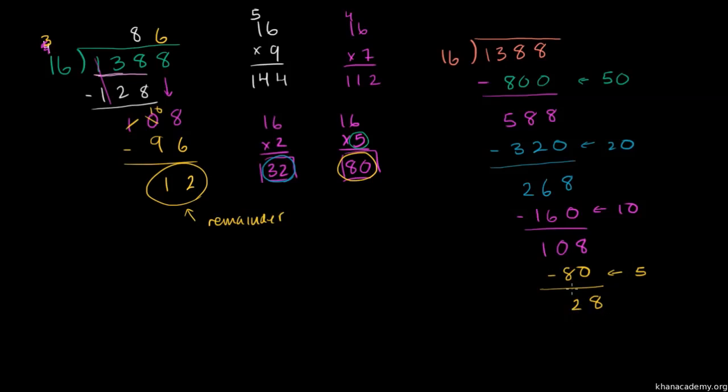And now it's pretty simple. How many times does 16 go into 28? Well, it only goes into it one time. And then when you subtract 16 from 28, 8 minus 6 is 2, 2 minus 1 is 1. You're left with a remainder of 12. But how do we know how many times does 16 go into 1,388? Well, it goes 50 times plus 20 times plus 10 times plus 5 times plus 1 time. So that's going to be 50 plus 20 is 70, plus 10 is 80, plus 5 is 85, plus 1 is 86. So there we have it. It went into it 86 times with a remainder of 12.